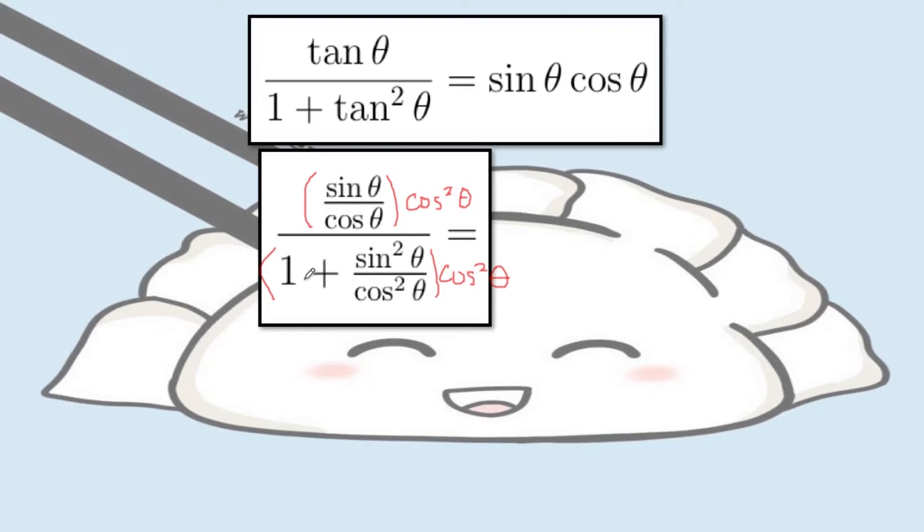So we're simplifying things along the way. Now, the cosine squared will distribute in the denominator, and the cosine squared will cancel with the cosine theta in sine theta over cosine theta. So there will only be one factor of cosine theta at the numerator.